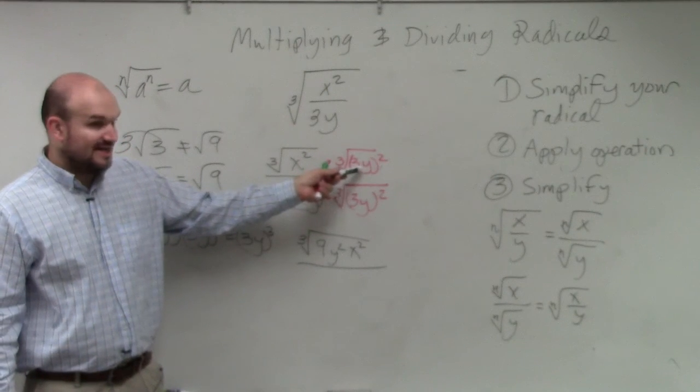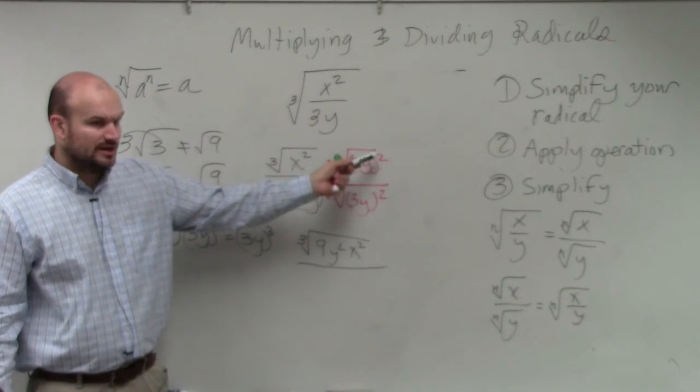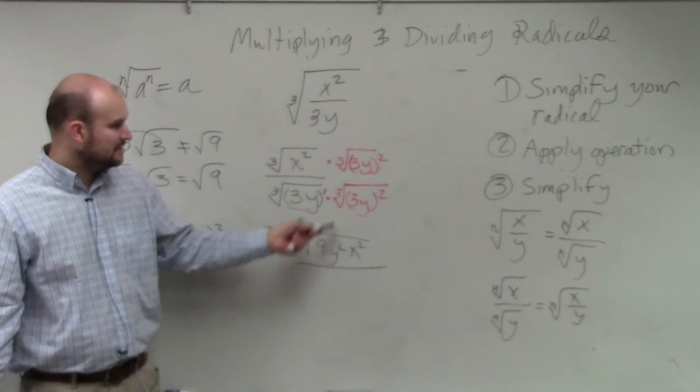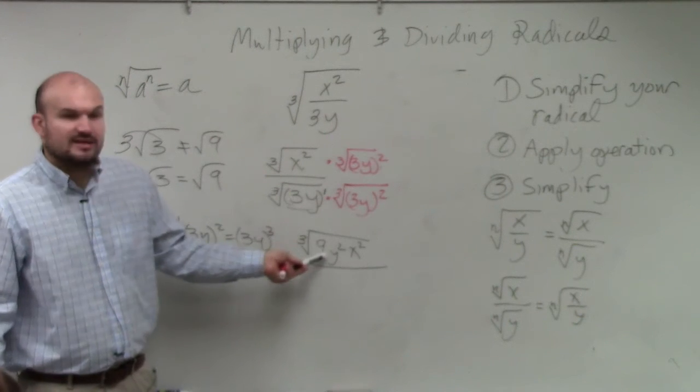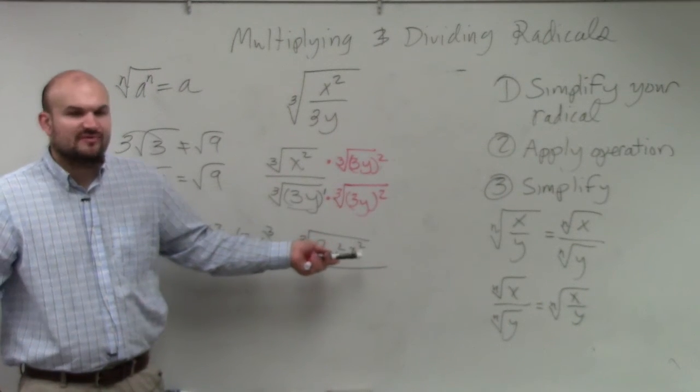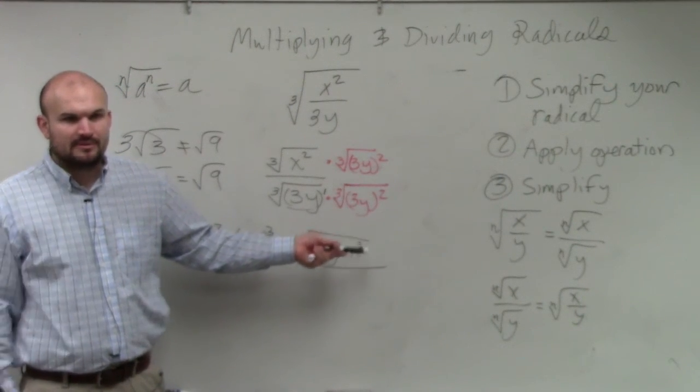I just multiplied. All right, I simplified this. 3y squared is 3y times 3y, which is 9y squared, right? I multiplied 9y squared times x squared. Well, that's just 9y squared times x squared. You can't simplify that. You just multiply them. Correct?